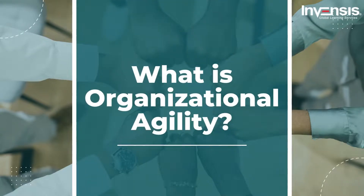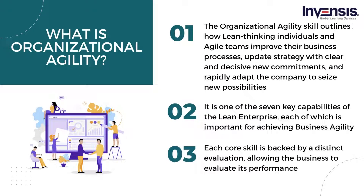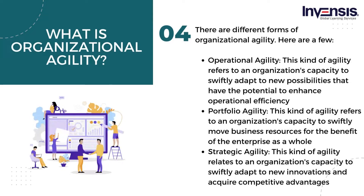Let us understand what is organizational agility. The organizational agility skill outlines how lean-thinking individuals and agile teams improve their business processes, update strategy with clear and decisive new commitments, and rapidly adapt the company to seize new possibilities. It is one of the seven key capabilities of the lean enterprise. There are different forms: operational agility — adapting to new possibilities to enhance operational efficiency; portfolio agility — swiftly moving business resources for the benefit of the enterprise; and strategic agility — adapting to new innovations and acquiring competitive advantages.